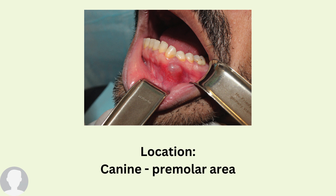The most common location for the lateral periodontal cyst is between the canine-premolar area, or between the two premolars. The characteristic feature is a radiolucency located on the lateral surface of the tooth. When you see a radiolucency on the lateral surface of the tooth and the associated teeth are non-carious and vital, you can identify this as a lateral periodontal cyst and not any other type.